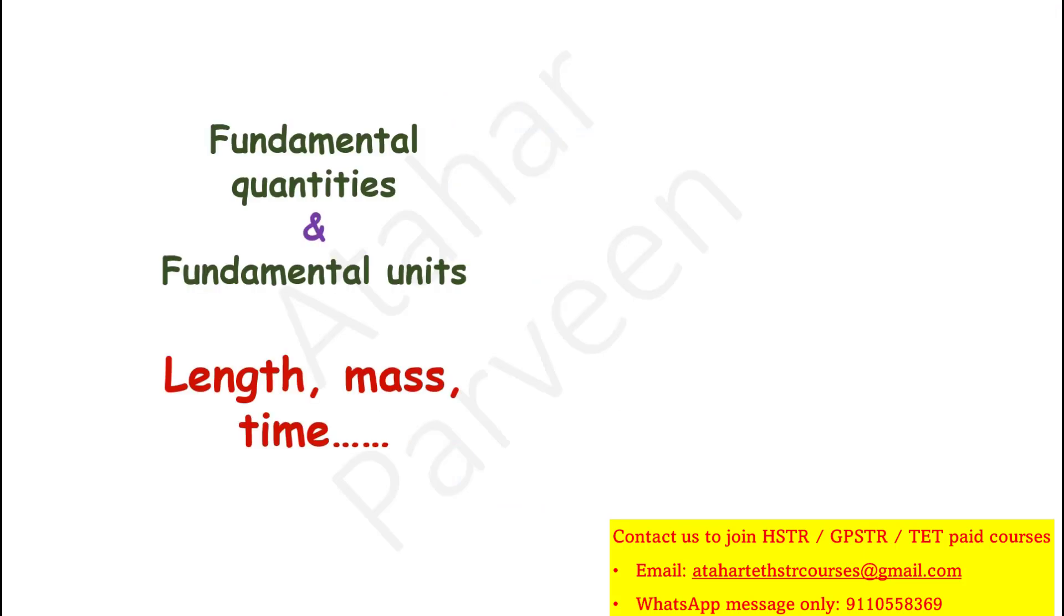There are few quantities which do not depend upon other quantities for their complete definition. Such quantities are known as fundamental quantities and their units are known as fundamental units. For example, length. Length cannot be resolved further, it cannot be resolved into any other physical quantity. So length is a fundamental quantity. Quantities such as mass and time are also fundamental quantities.